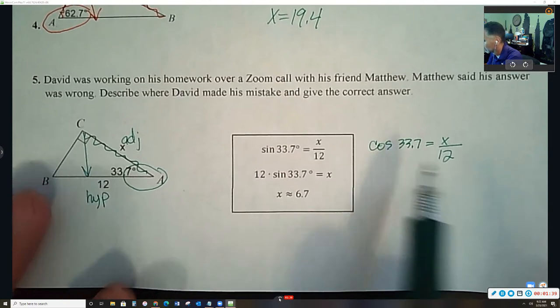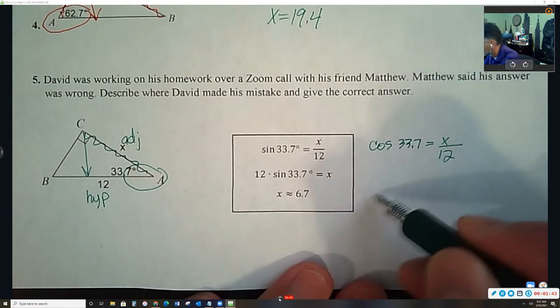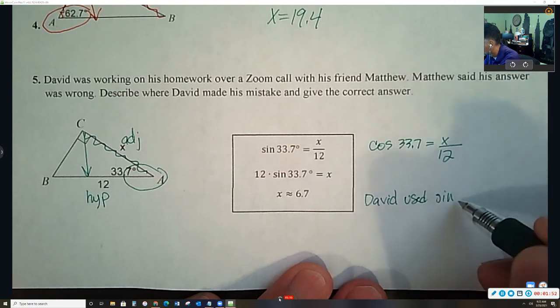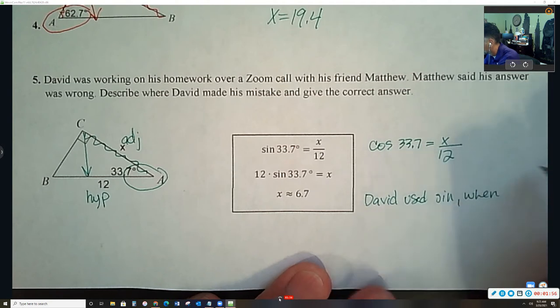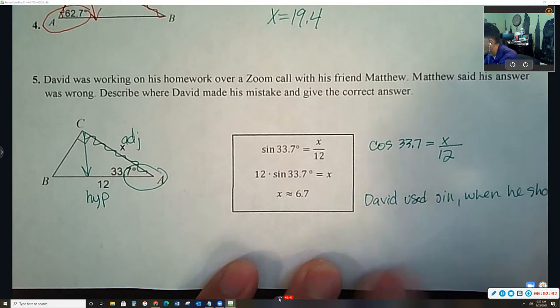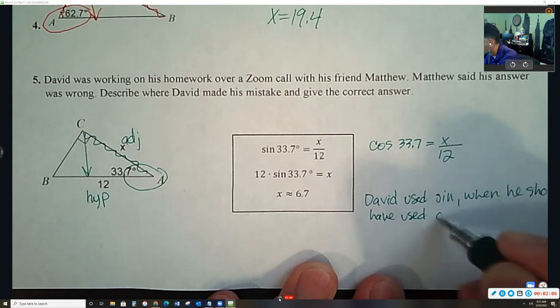So in the answer, I would say something like this: David used sine when he should have used cosine.